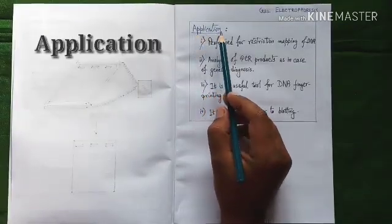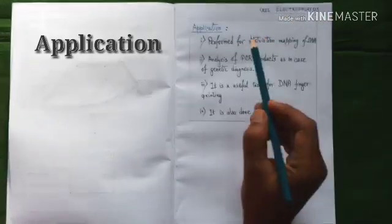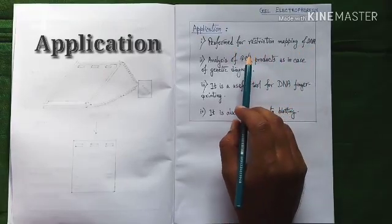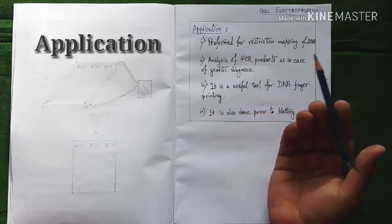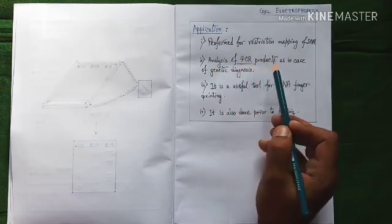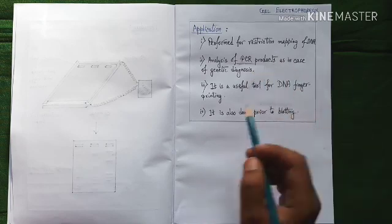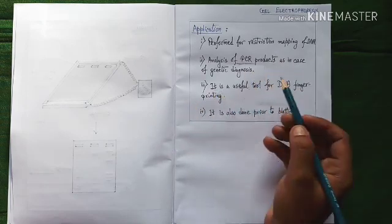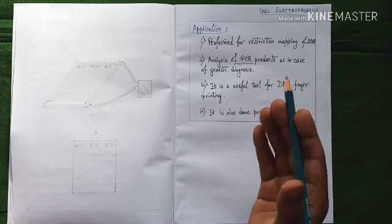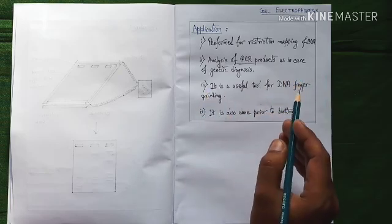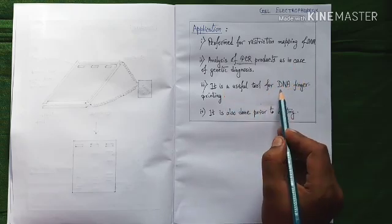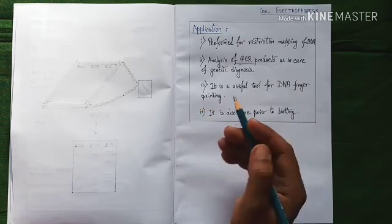Now at last we will know about the applications of gel electrophoresis. The first application: gel electrophoresis is generally performed for restriction mapping of DNA, and it is generally done to separate DNA of different sizes after restriction enzyme digestion. The next application may be gel electrophoresis is used for analysis of PCR products, as in case of genetic diagnosis. The next application may be it is a useful tool for DNA fingerprinting. The DNA fingerprinting process has been earlier described and I am giving the link at the cart, so you can follow that video too. So from that video we will also know about the use of gel electrophoresis in the process of DNA fingerprinting.